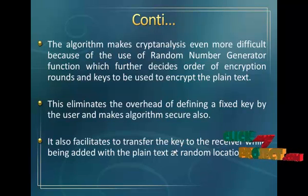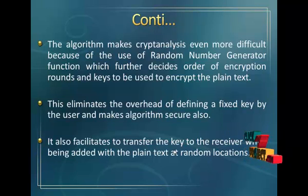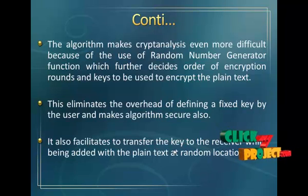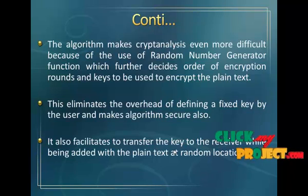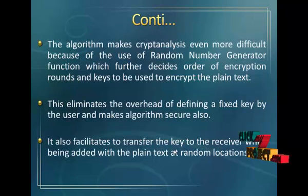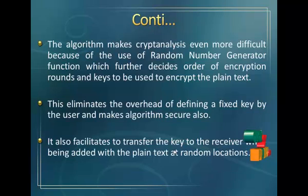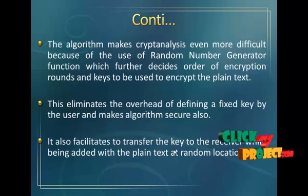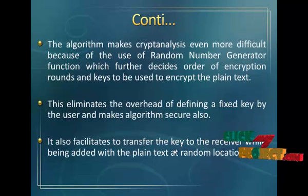This method converts all the environment for the text file. It also facilitates transfer of the key to the receiver while being added with the plain text at a random location. All information is converted through this process to finally get one type of cipher text. The reverse altering process is then used to get the original text, where the user enters a secret key to retrieve the original content.